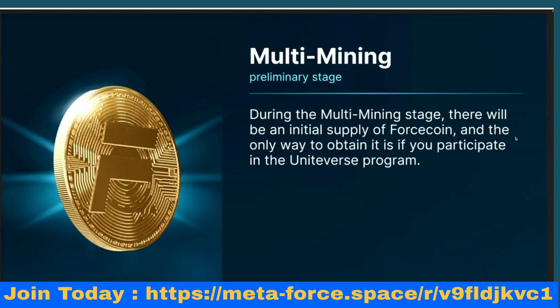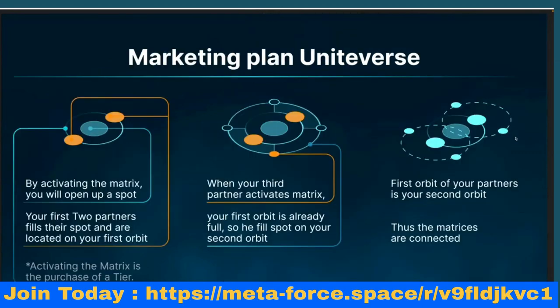In the initial stage the metaverse will gradually appear in beta version, and in the next stage there will be an alpha version where access levels are introduced. Our cryptocurrency, the Force coin, is necessary throughout the ecosystem. The multi-mining is the preliminary stage during which there will be an initial supply of Force coin. 80% of the total supply is dedicated to the multi-mining, and any coins not used will be burned, reducing the total supply.